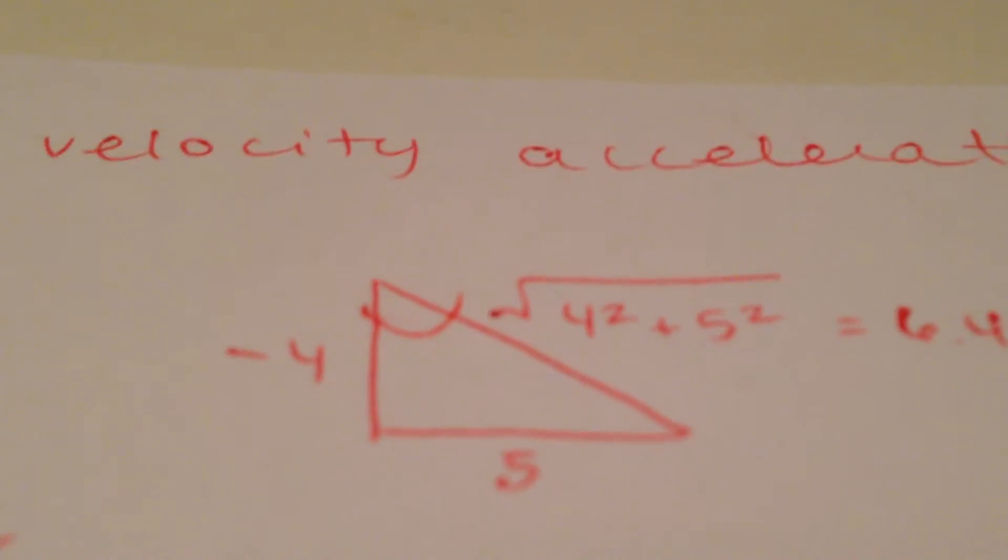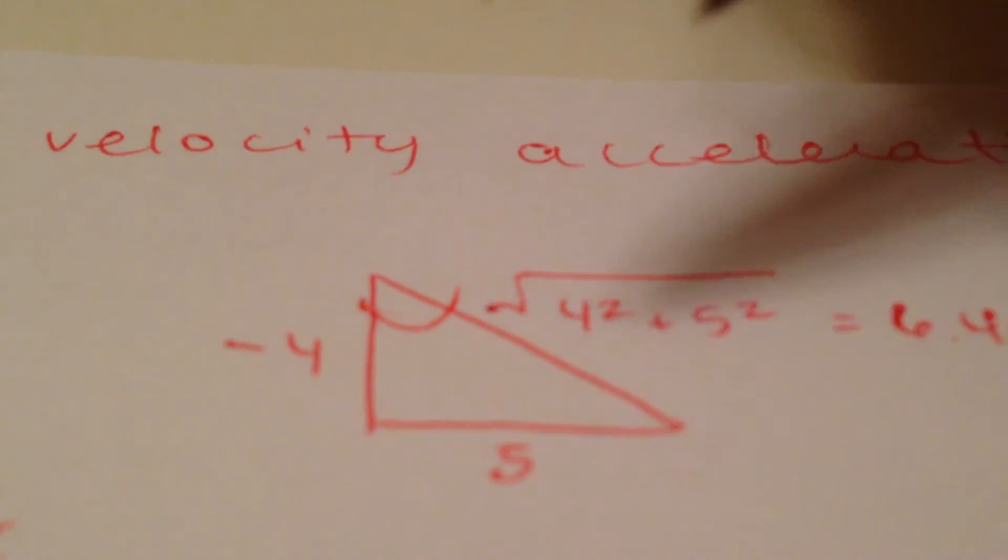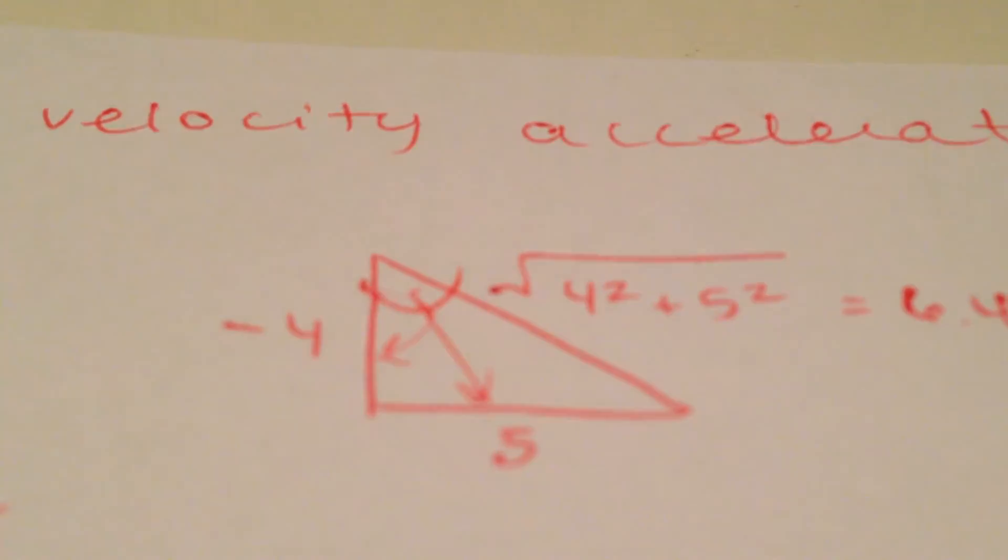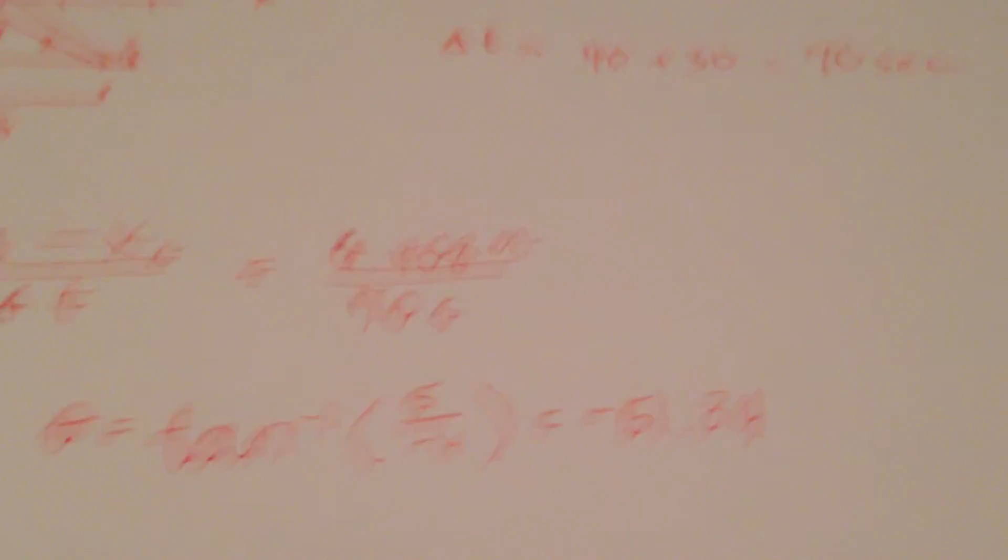To do that I did opposite over adjacent which is tangent. So inverse tangent of opposite over adjacent is negative 51.34, and that's degrees.